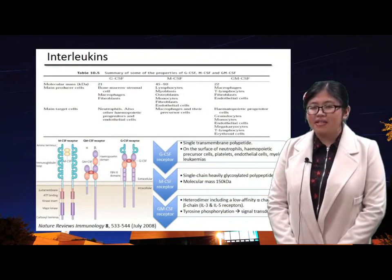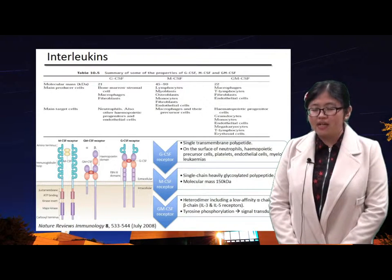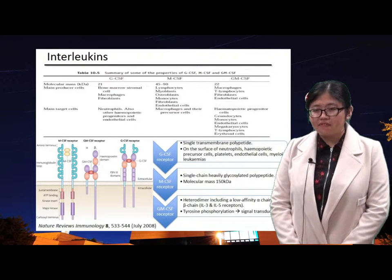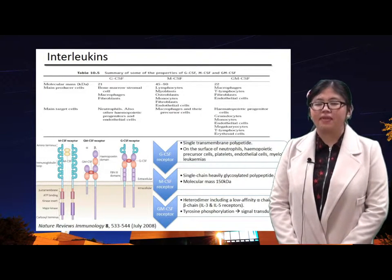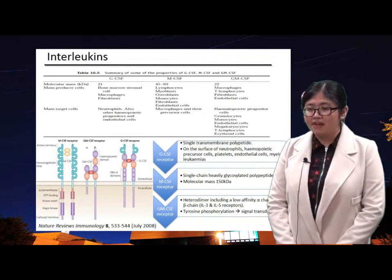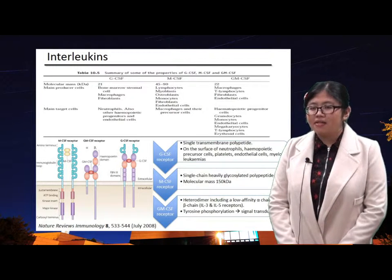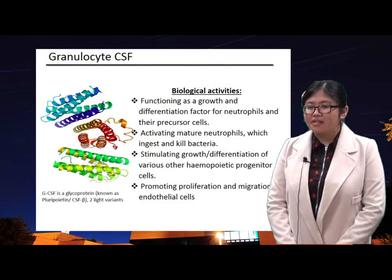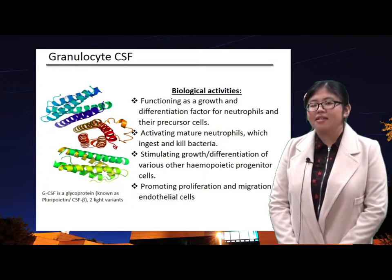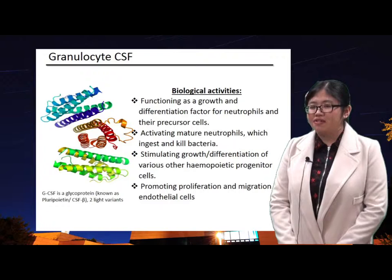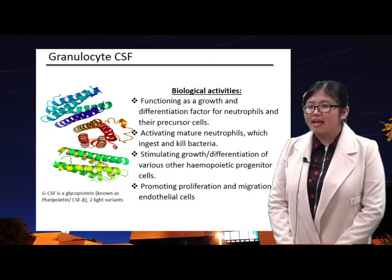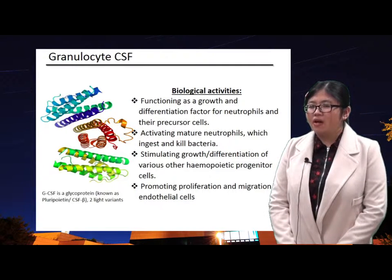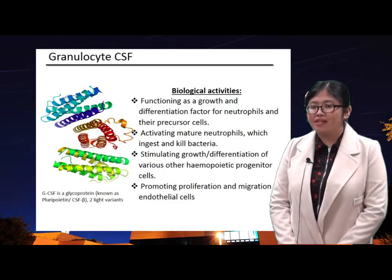There are three main colony-stimulating factors belonging to the interleukin families: granulocyte CSF, macrophage CSF, and granulocyte-macrophage CSF. The table generally summarizes some properties of them in terms of molecular mass, cell types they are produced from, and their targets during biological activities. Granulocyte colony-stimulating factors function as differentiation factors for neutrophils and precursor cells, and they activate macrophages to ingest and kill bacteria. They also stimulate growth and differentiation of various other hematopoietic progenitor cells.